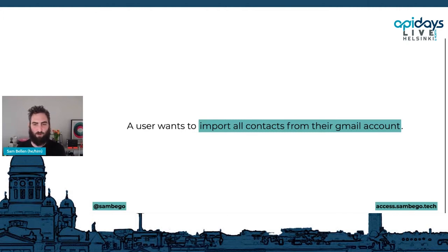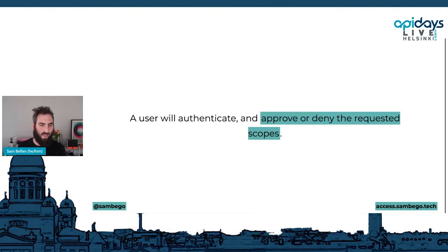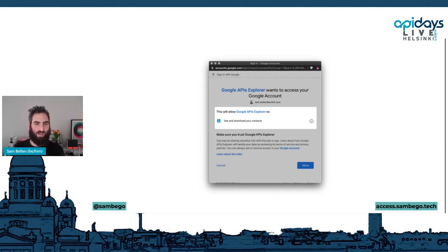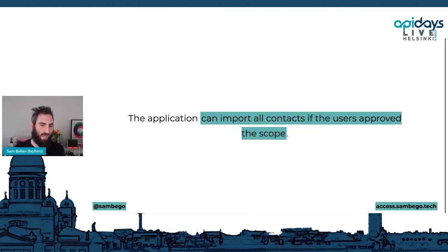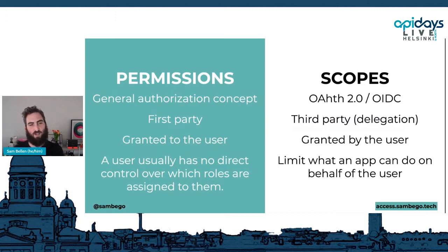Here's an example of the delegation scenario: a user wants to import all contacts from their Gmail account. The application requests the 'contacts.readonly' scope to Gmail, and the user authenticates and approves or denies it. Gmail shows a consent screen saying 'See and download your contacts.' The application can import all contacts if and only if the user approved that scope — if they denied it, the application has no way of reading those contacts.